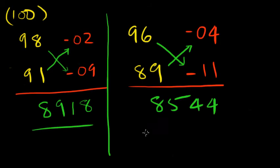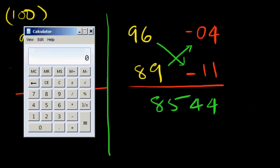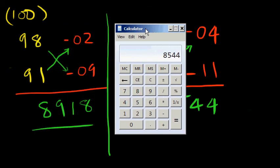Let's just verify for the sake of it. And we'll make sure that what we're doing is correct. So here we go. 96 times 89. 8544. How cool is that? And here we're going to do 98 times 91. 8918. That's the answer we have.